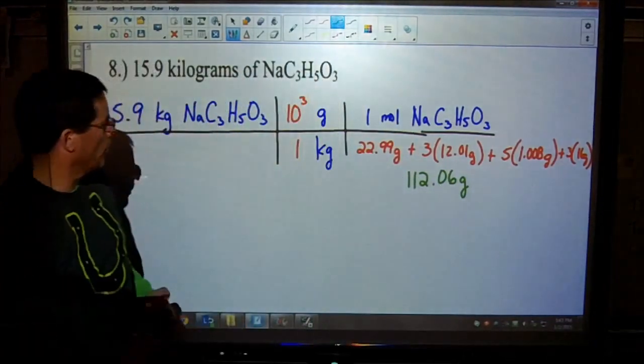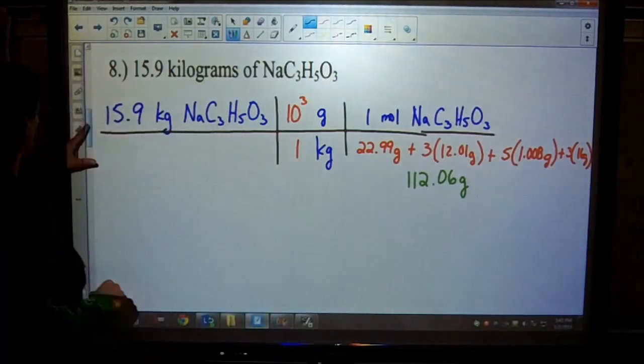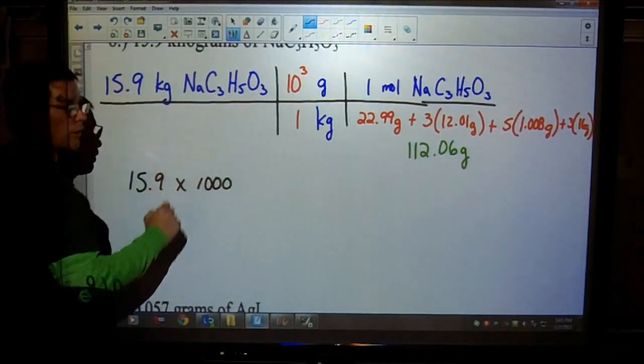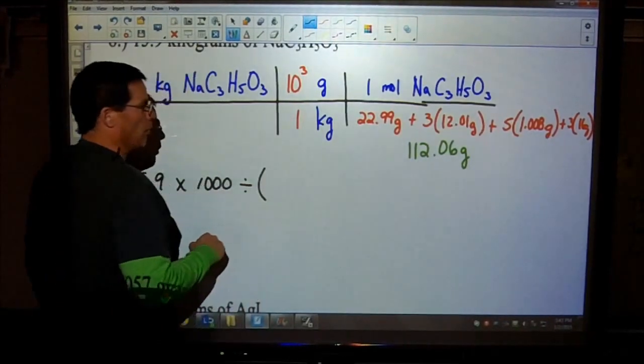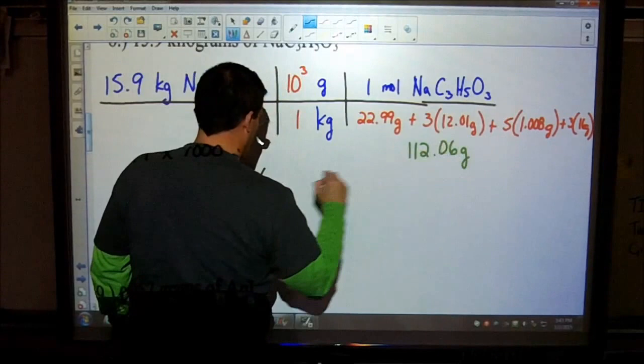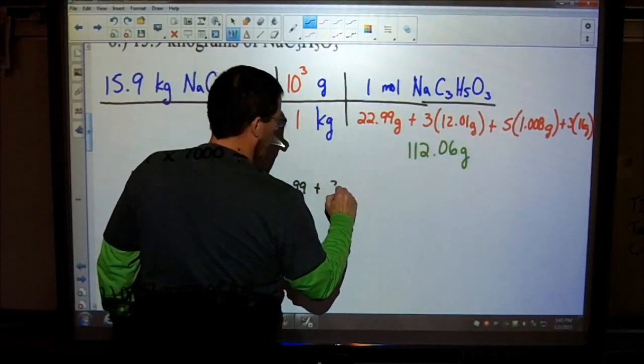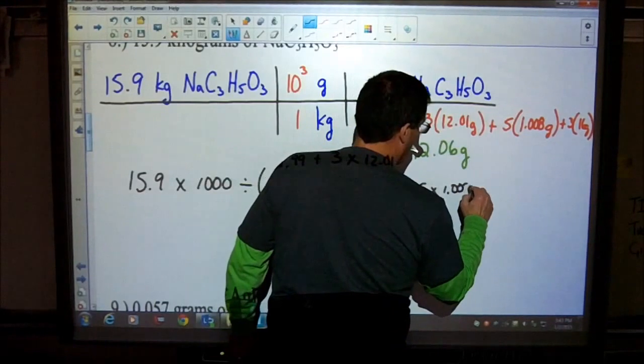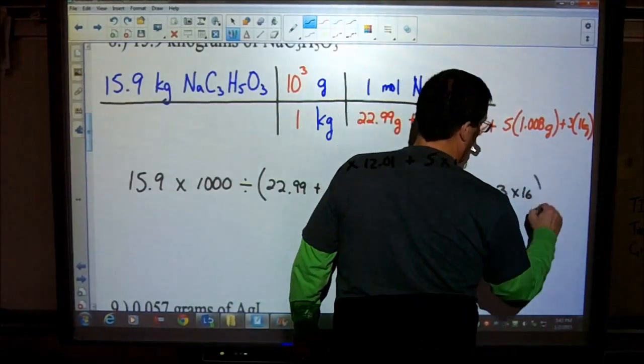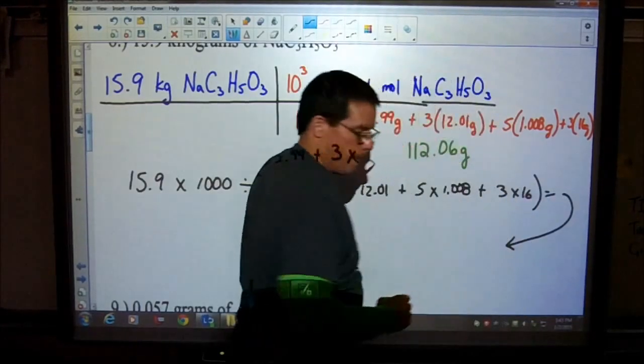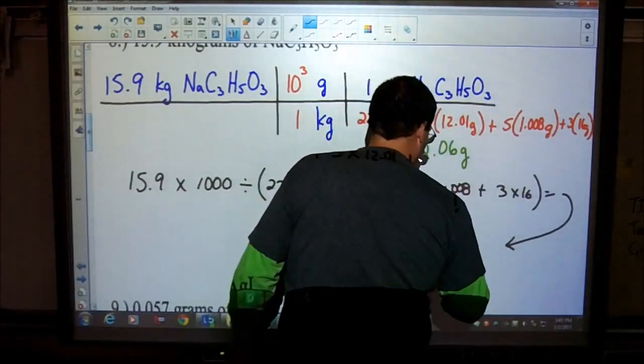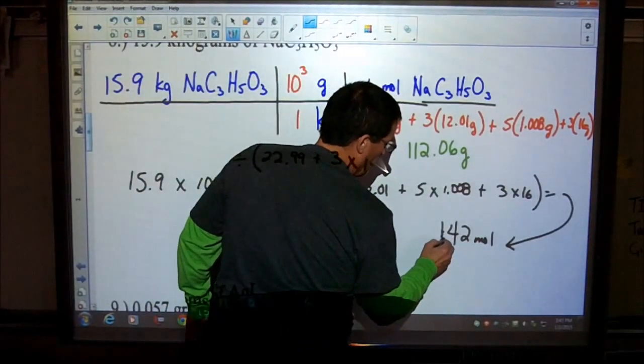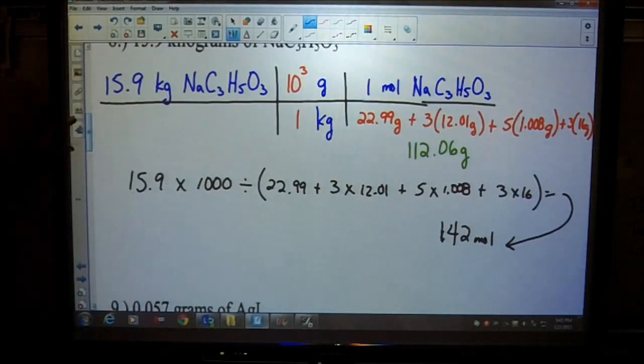There's our molar mass. Now, when we go to solve for this, the best way to type this in is I have 15.9 times 1,000, or if you need to do 10 to the 3, that's okay, divided by, open up your parentheses. 22.99 plus 3 times 12.01 plus 5 times 1.008 plus 3 times 16. And when you do all that, then your answer should be around 142 moles.